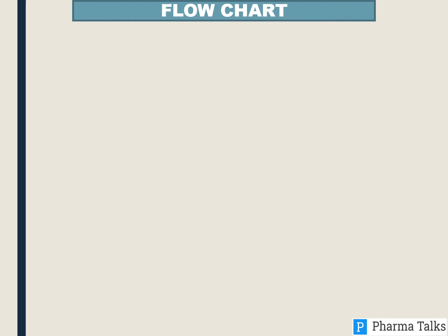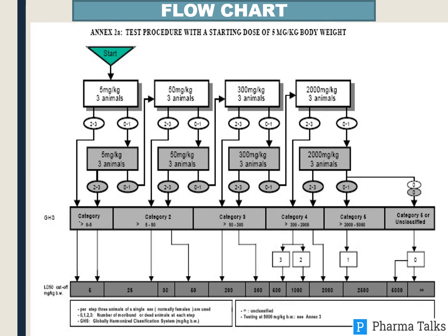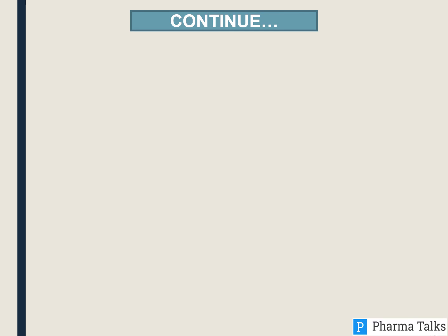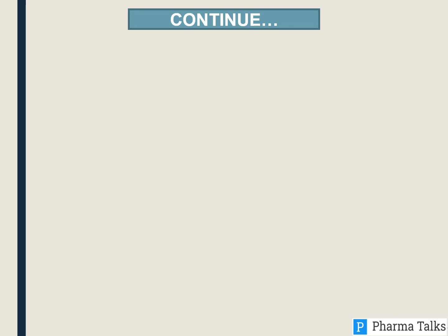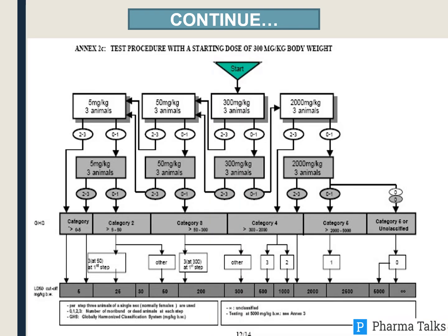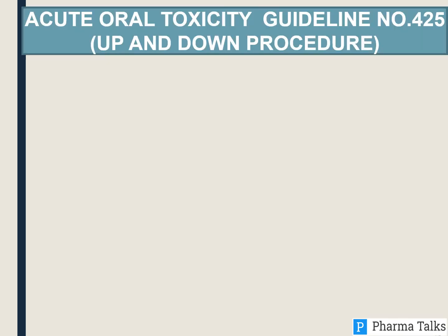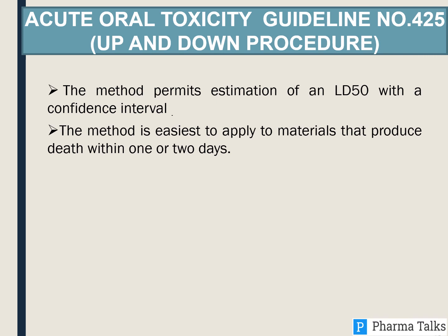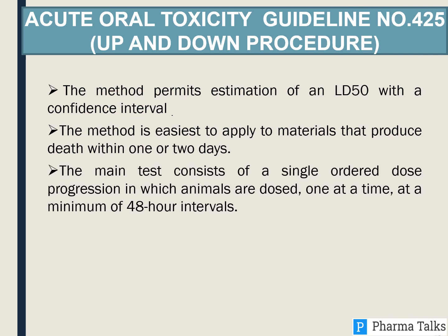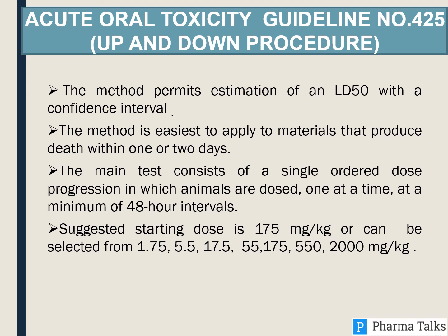Test procedure with starting dose of 5 mg/kg body weight, and test procedure with starting dose of 300 mg/kg body weight. Acute Oral Toxicity Guideline No. 425 — Up and Down Procedure. The method permits estimation of an LD50 with a confidence interval. This is easiest to apply to materials that produce death within two days. The main test consists of a single-order dose progression in which animals are dosed one at a time at a minimum of 48-hour intervals.